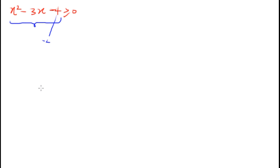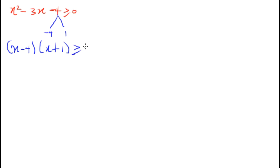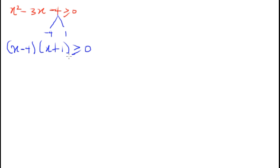So the factors are (x minus 4) and (x plus 1), and we insert the inequality sign to get (x minus 4)(x plus 1) greater than zero. Now, since we already have the factors and the expression is greater than zero, we need to think about what this means.